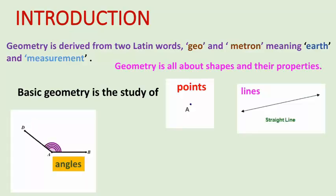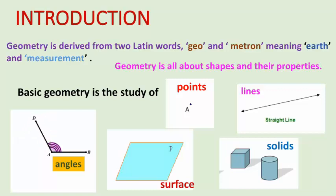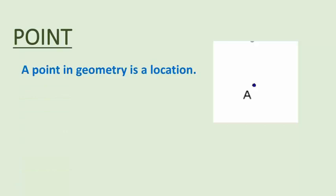In basic geometry, we study about points, lines, angles, surfaces, and solids. We will learn all these topics one by one. First of all, we will learn what is a point. A point in geometry is a location.